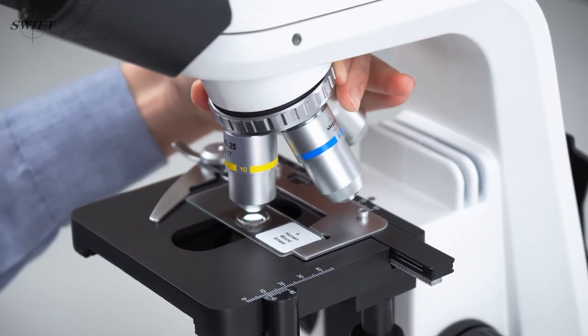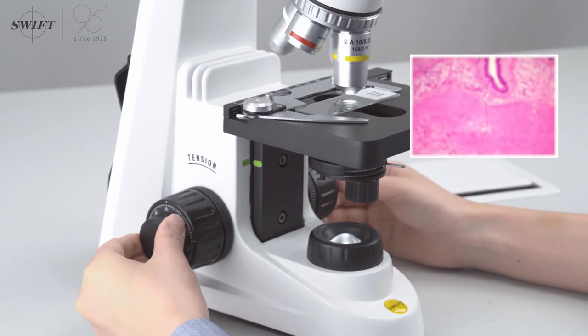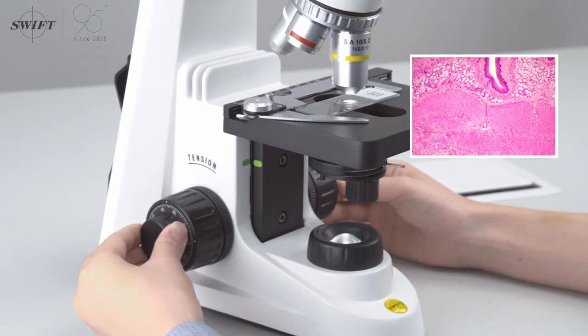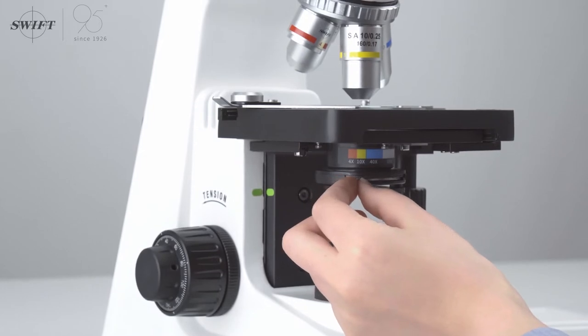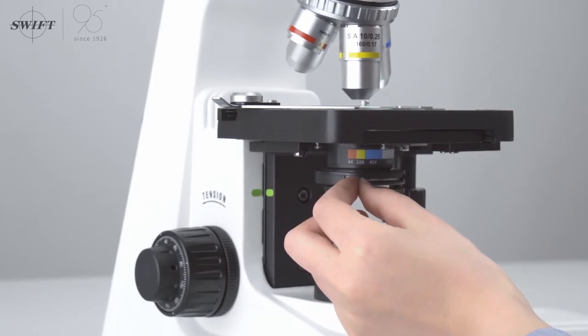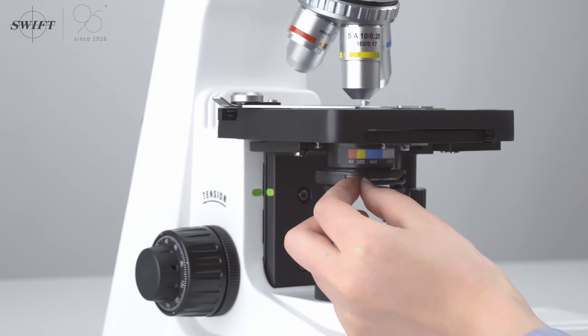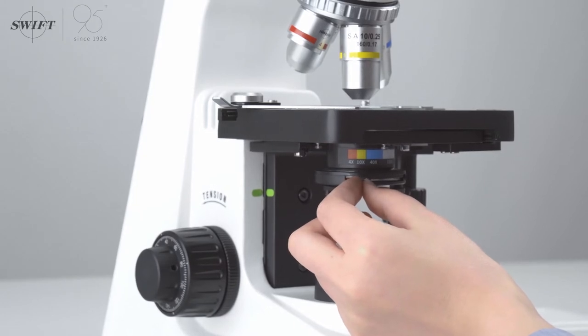Use the 10x objective lens to observe the image under the microscope, and adjust the fine focus to make it clear. Then adjust the aperture diaphragm to the corresponding 10x color-coded area, so that the image under the microscope can achieve the best effect.